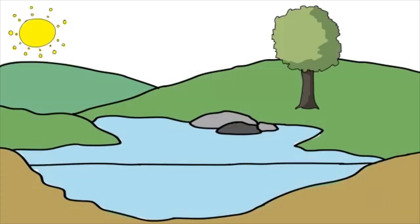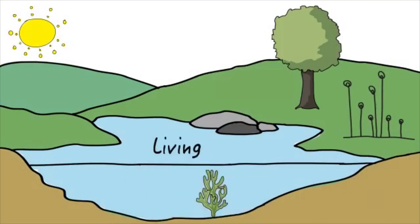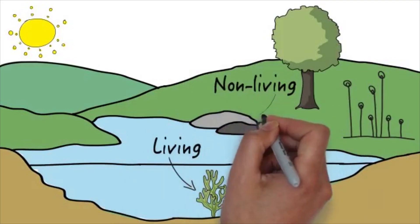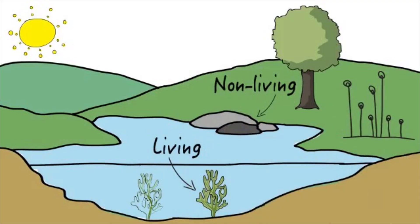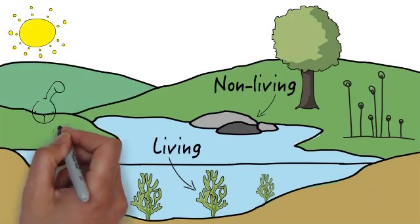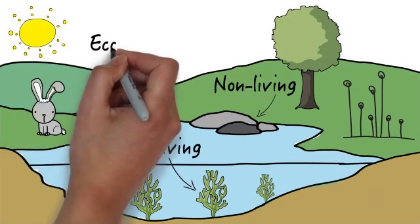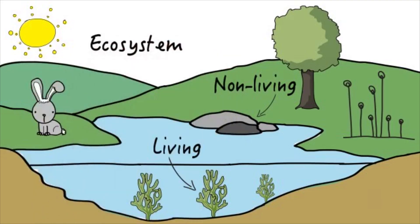An environment is everything that surrounds both living beings and non-living beings. Each living being needs a specific environment that fulfills its needs in order for it to survive. Both living things and non-living things make up an ecosystem. An environment has a specific climate that determines an ecosystem.